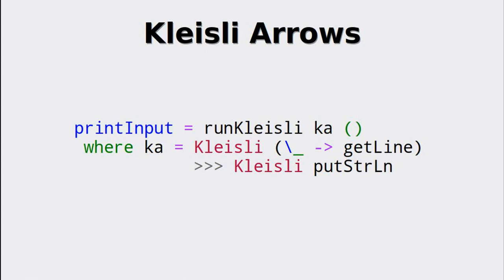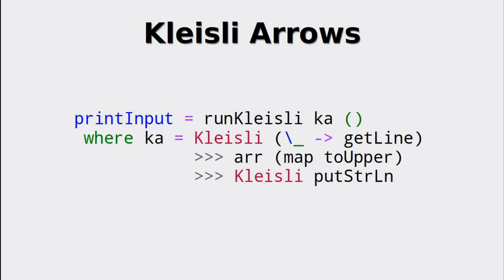The arrow resulting from the combination, called Ka in this example, has to be executed with the runKleisli function, supplying the initial argument. In our example, this argument is of course irrelevant, so it's just the empty tuple. Now we can use other functions in this data flow, so the combinators we have already seen can easily be used in combination with the Kleisli constructor in order to achieve the same data flow with any monad we like.